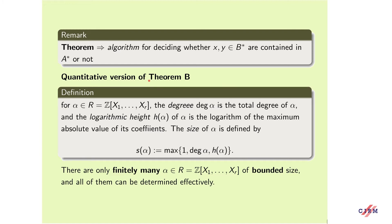We proved also a quantitative version of Theorem B. To state this, we introduce the so-called size of elements. For an element alpha in R, the degree of alpha is the total degree of alpha as a polynomial, and the logarithmic height of alpha is the logarithm of the maximum absolute value of its coefficients. The size of alpha is defined as the maximum of these quantities. There are only finitely many alpha in this polynomial ring with bounded size, and all of them can, at least in principle, be effectively determined.